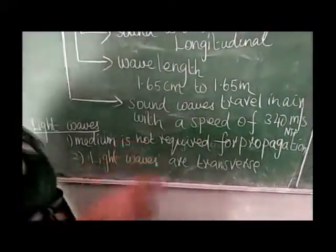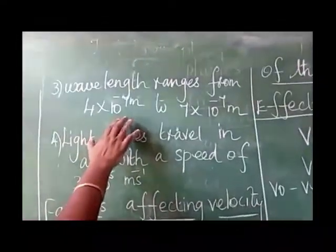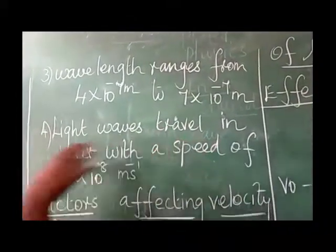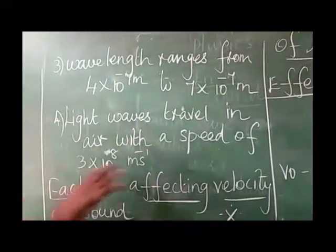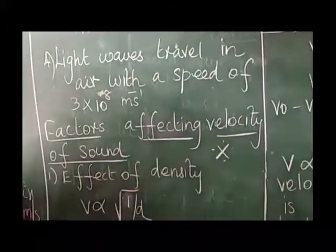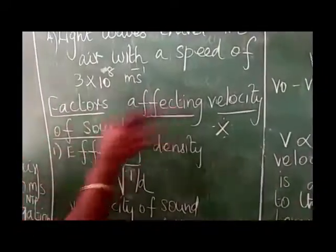Light waves: medium is not required for propagation. Light waves are transverse. Wavelength ranges from 4 times 10 power minus 7 meter to 7 times 10 power minus 7 meter. Light waves travel in air with the speed of 3 times 10 power 8 meters per second.